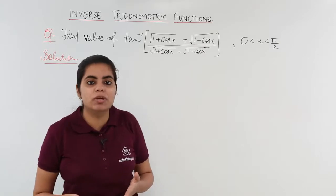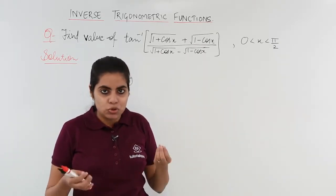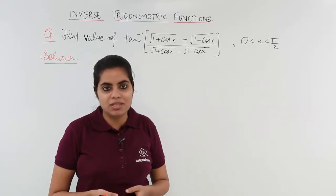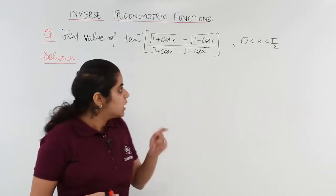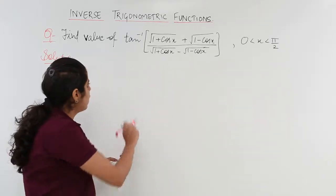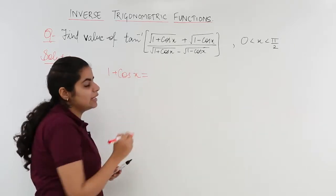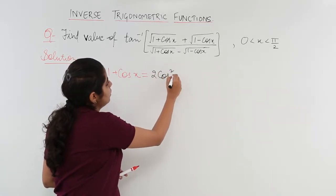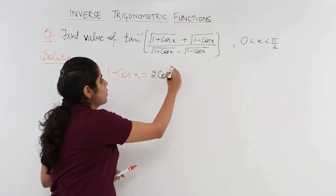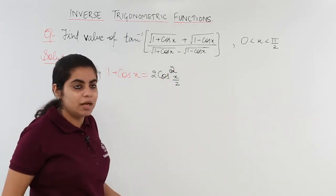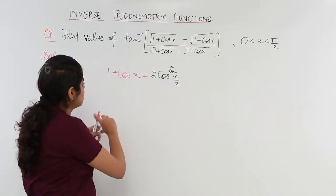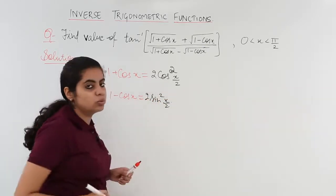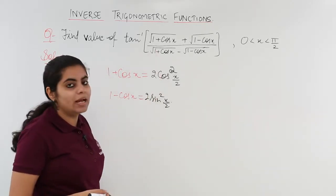Whenever you see trigonometry or any functions involved with trigonometry, you should know certain formulas — sin²θ + cos²θ, what is 1+cosθ, or what is 1+cos2θ and so on. In this question, when I see 1+cosx, it immediately catches my attention. I remember the formula: 1+cosθ = 2cos²(θ/2). Similarly, 1−cosθ = 2sin²(x/2). Knowing these formulas makes it easy to apply them to the given question.